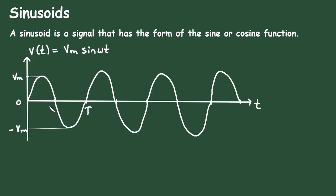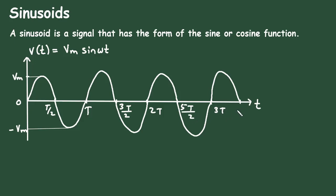If this full cycle is T, then this will be T by 2. The markings on the x-axis are: T by 2, T, 3T by 2, then 2T, then next 5T by 2, and this will be 7T by 2.